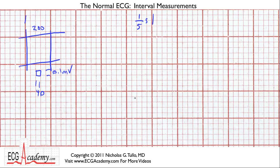Let's talk about the ECG. Atrial depolarization gives you a small bump known as a P wave. Ventricular depolarization results in a QRS complex. And then there's always a relaxation wave known as the T wave — so that's the QRS, and here's the T wave.